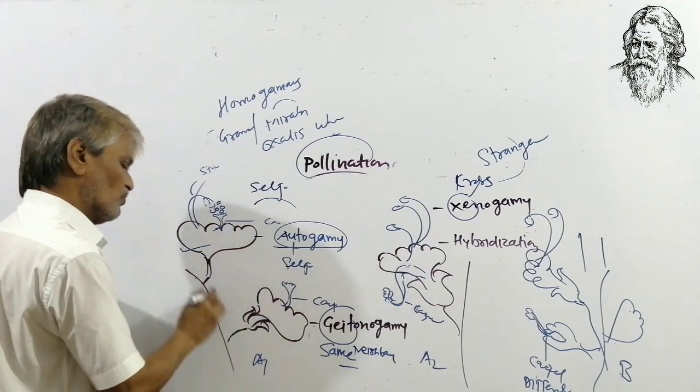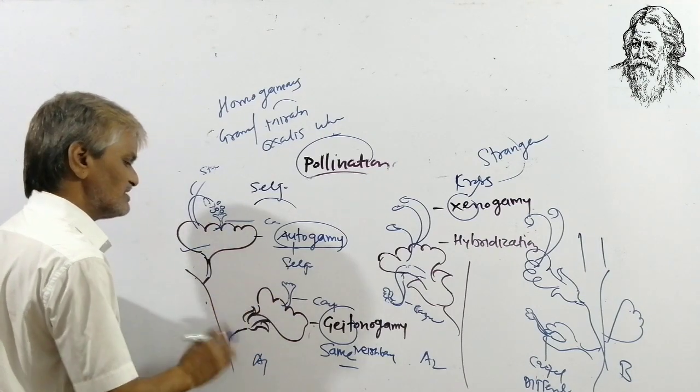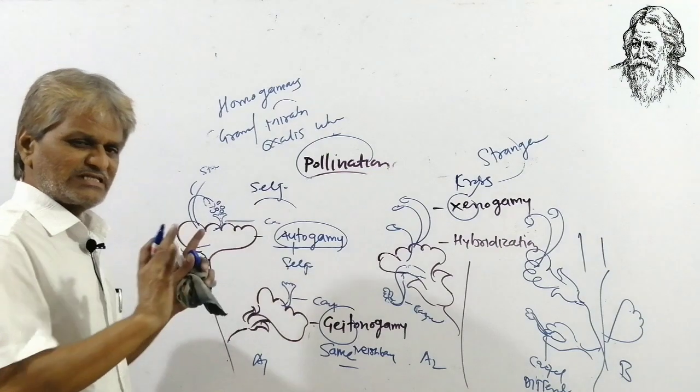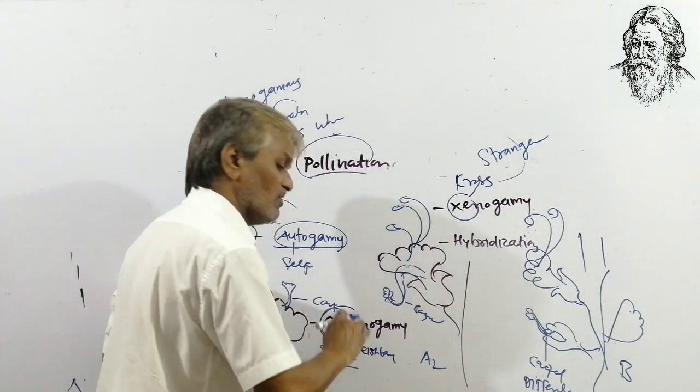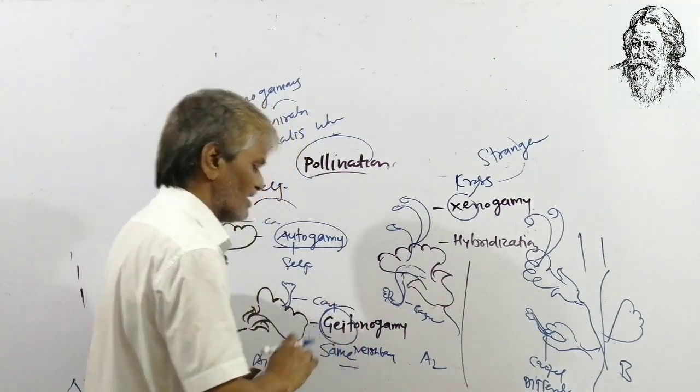Geitonogamy: transfer of pollen grains from the anther of one flower to the receptive stigma of another flower located on the same plant. This phenomenon is called geitonogamy.